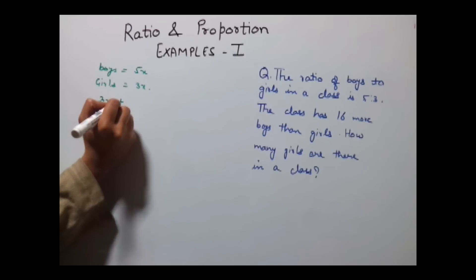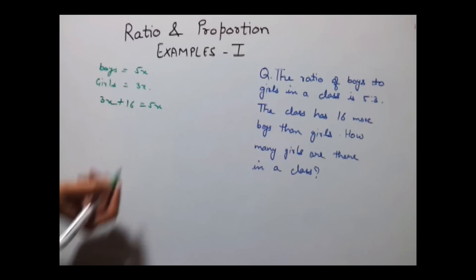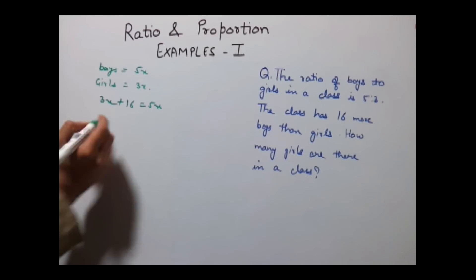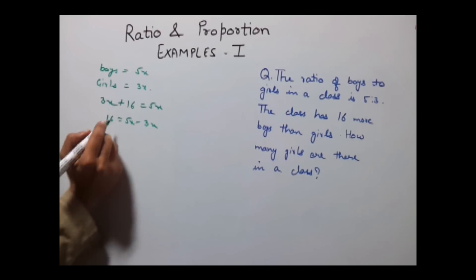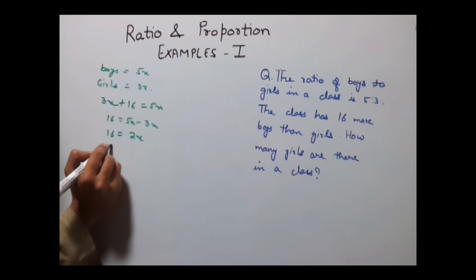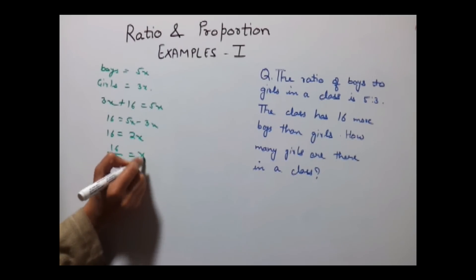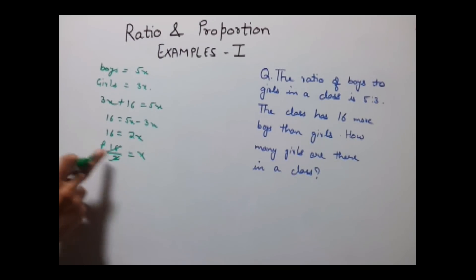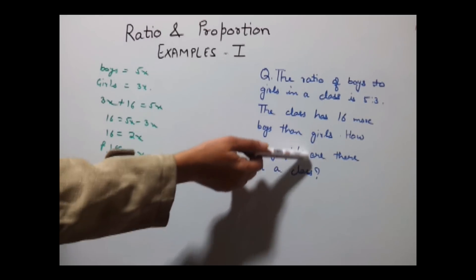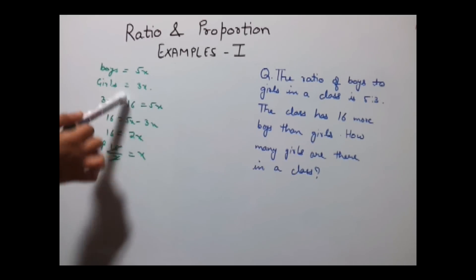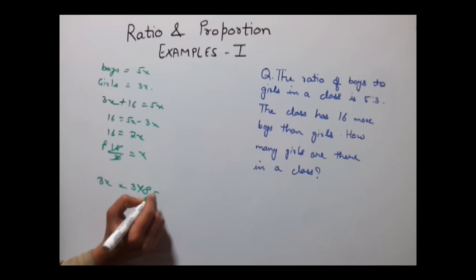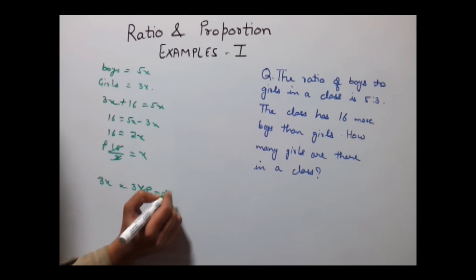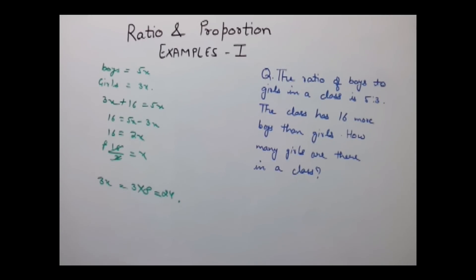So 3x + 16 = 5x, which gives 16 = 5x − 3x = 2x. Therefore x = 16 ÷ 2 = 8. We need to find the total number of girls in the class, and girls are 3x. So 3x = 3 × 8 = 24 is the answer.